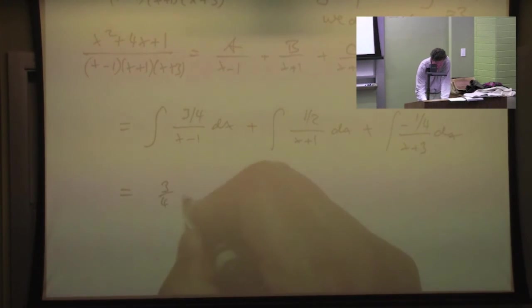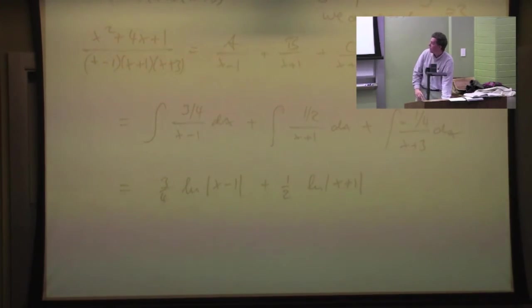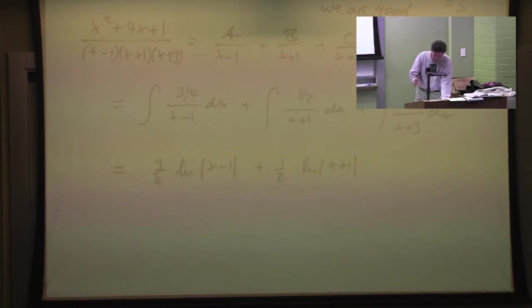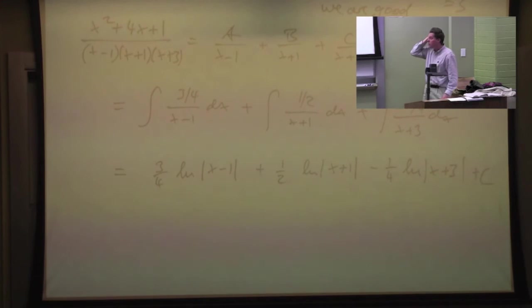So you got the 3 fourth coming out up front. And then you got Ln. And never forget the absolute value, okay? You got the x minus 1 here. You got the 1 half. And then the Ln. And the x plus 1. And then you got negative 1 fourth. Ln. And then x plus 3. Plus constant. And that solves this problem.